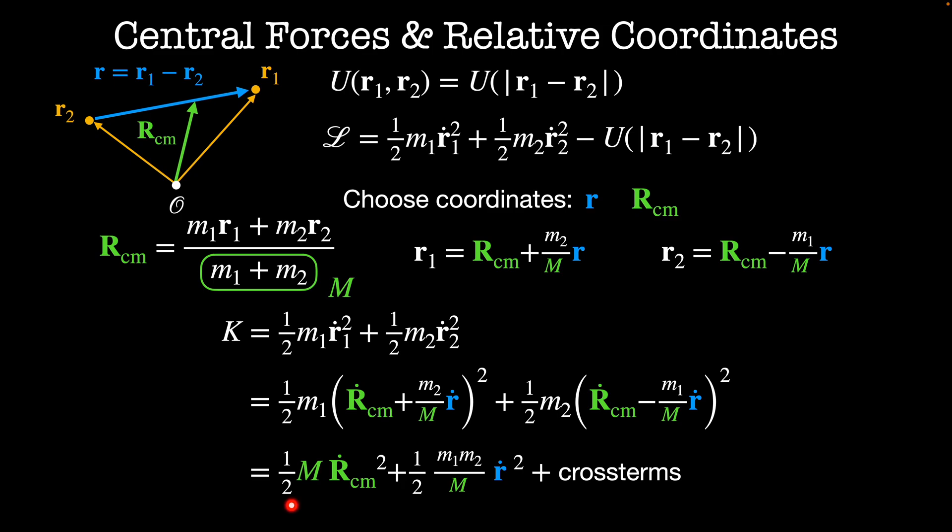we end up with 1/2 the total mass times Rcm dot squared plus 1/2 m1 times m2 divided by the total mass M times r dot squared plus cross terms, but the cross terms cancel out. This term here, m1 m2 divided by the total mass, shows up a lot, so we're going to call it μ, which is the reduced mass.